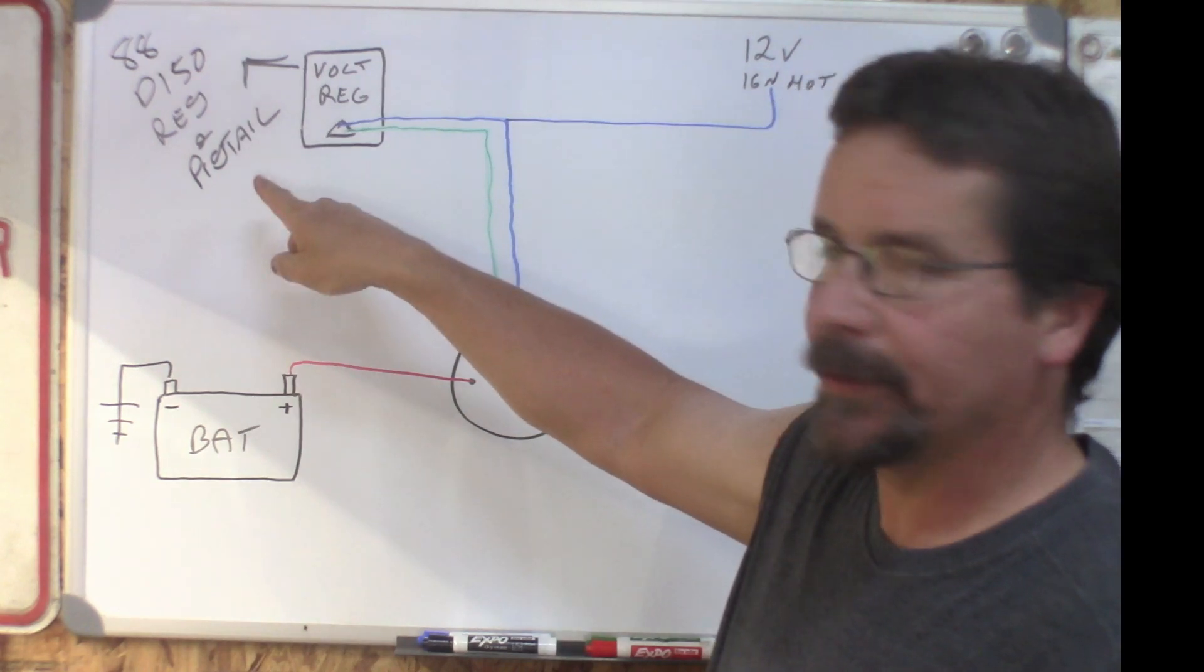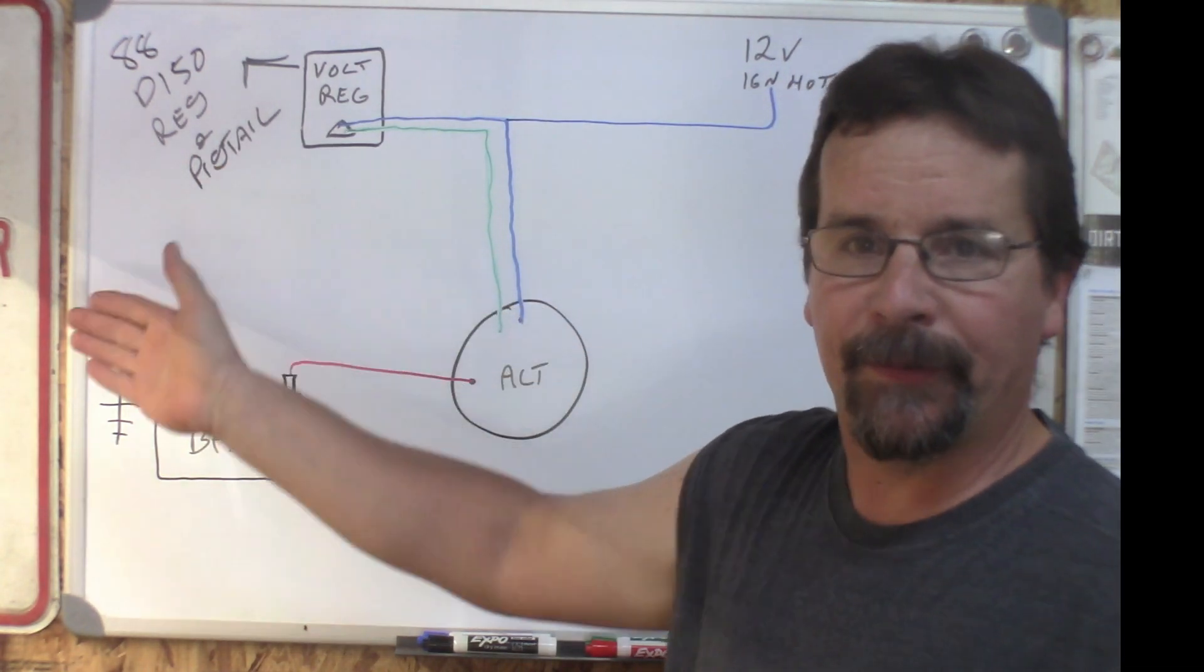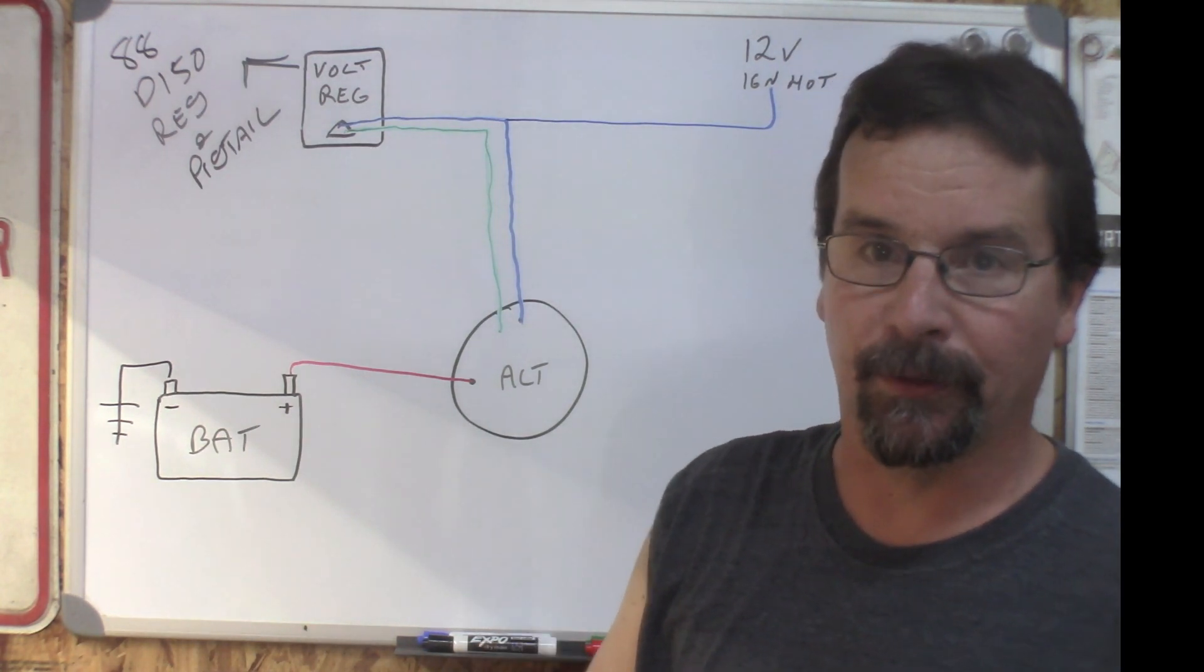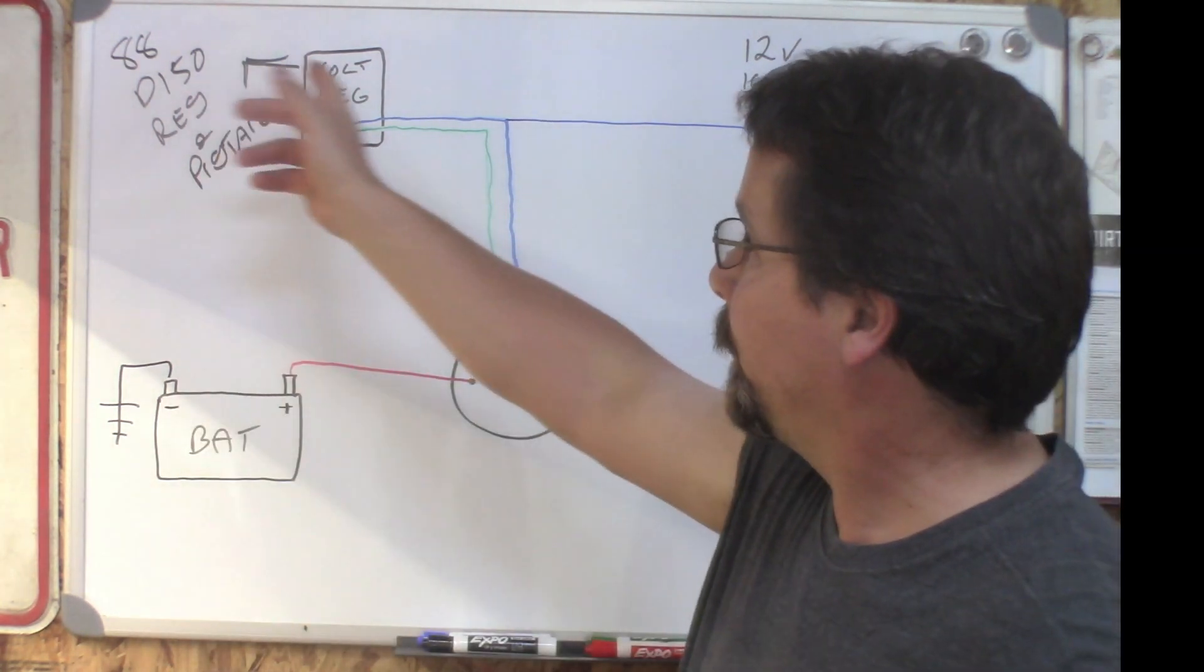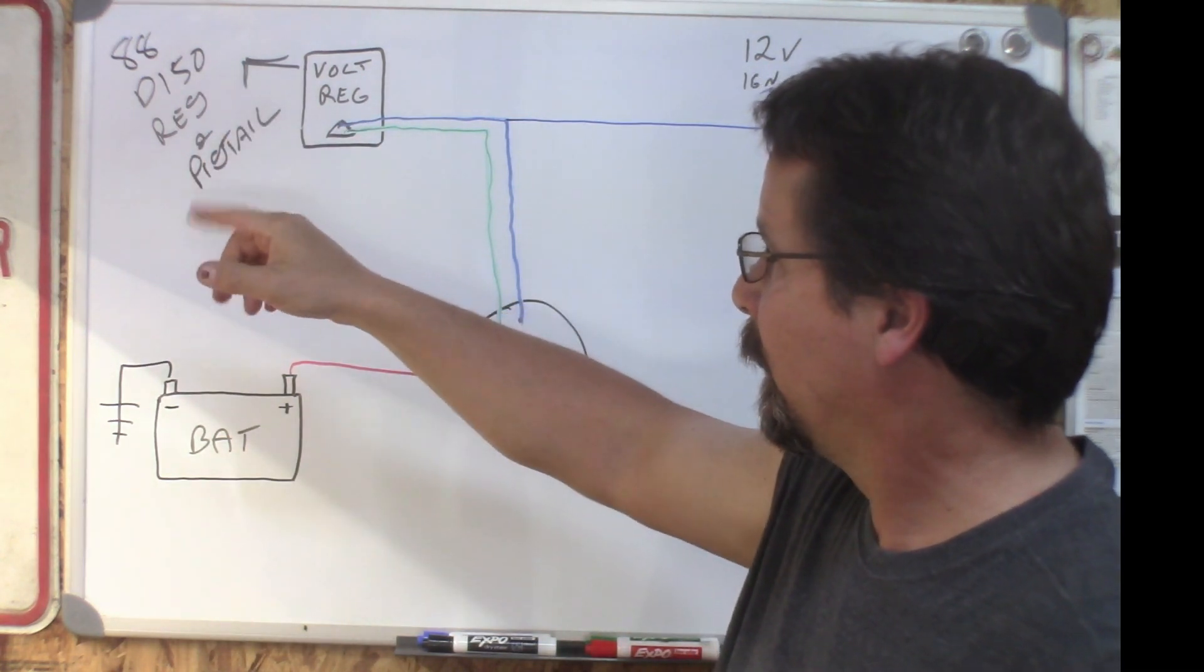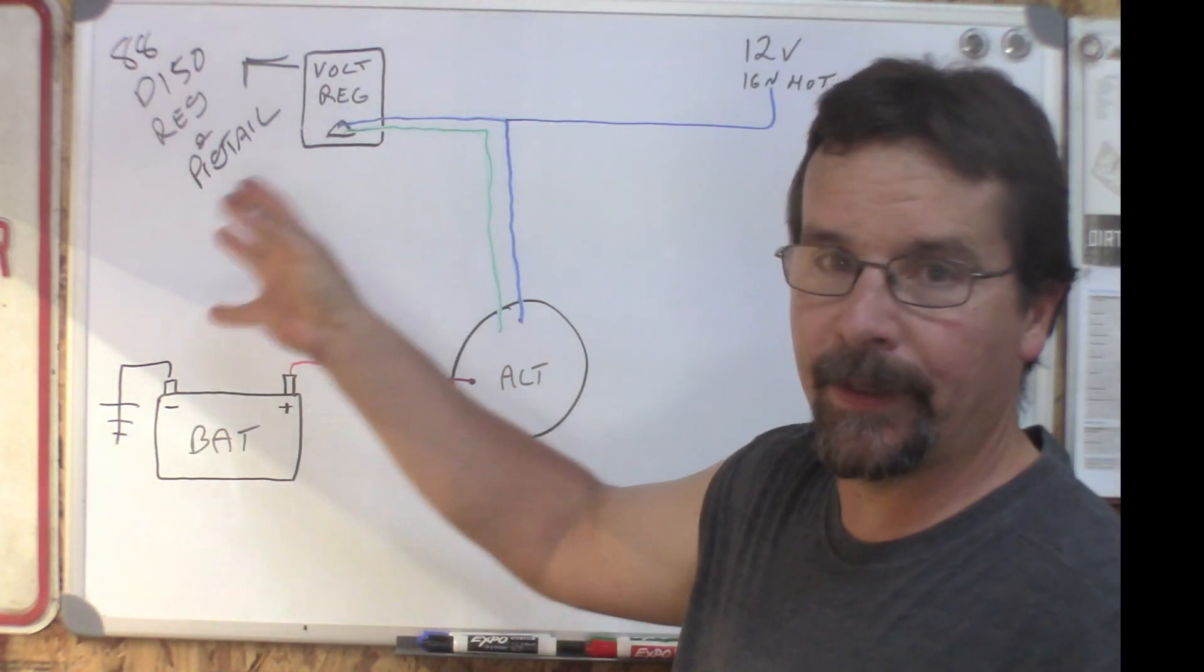And you need the pigtail to go with it. For the sake of simplicity, when you go to your local parts store, because you can literally find this at any parts store it's that common, go up there and tell them you need the regulator and a pigtail for an 88 Dodge D150 and you'll be set.